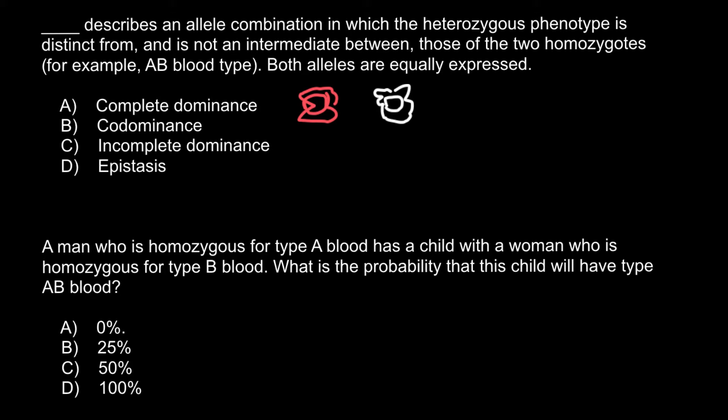So with simple complete dominance, if we cross these two plants, all the resulting progeny would have red flowers.